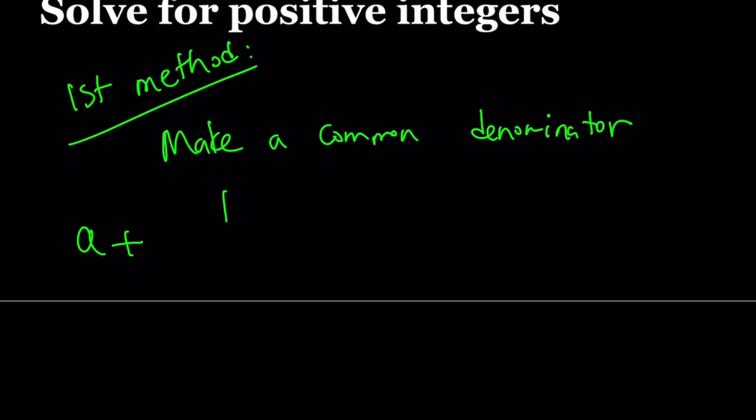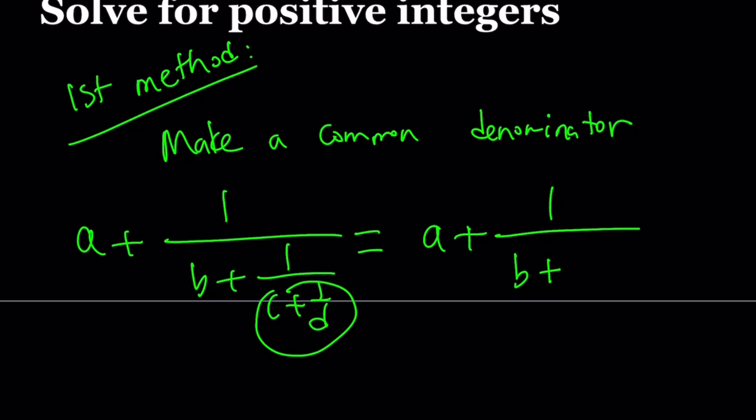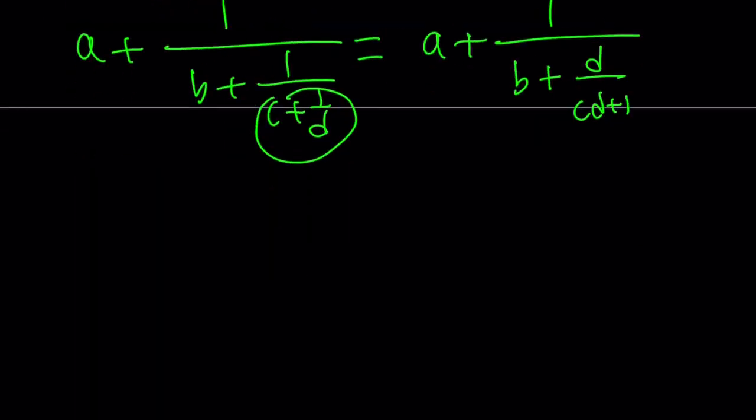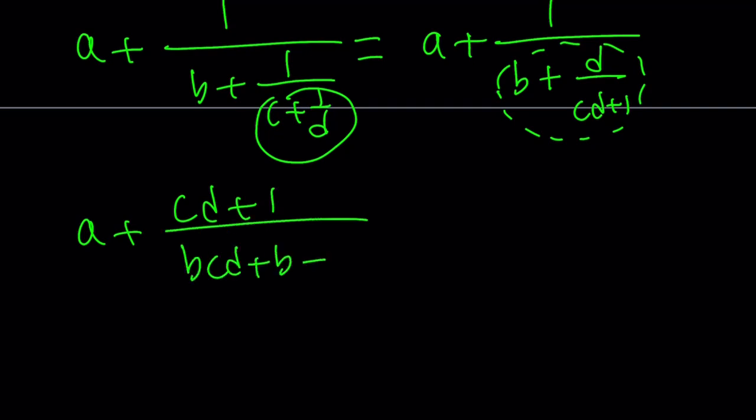So here's what I'm going to do. I'm going to make a common denominator. Start off with A plus 1 over B plus 1 over C plus 1 over D, and start at the bottom, make a common denominator, and turn this into A plus 1 over B plus D over CD plus 1. Because what you're supposed to do is BCD plus B plus D over CD plus 1, but then 1 over is just going to give you the reciprocal. That's why I have to flip it.